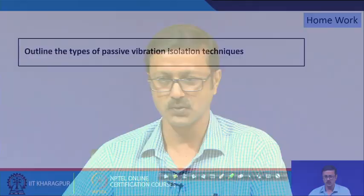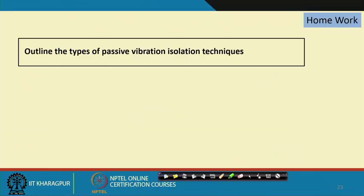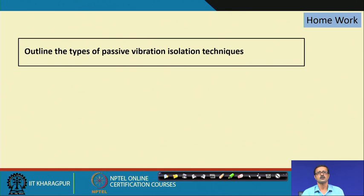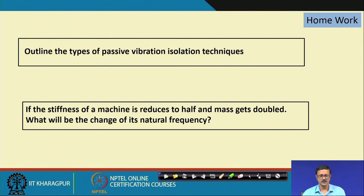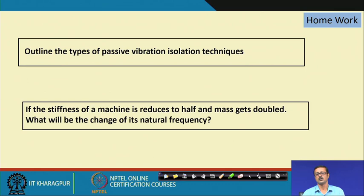At the end of this lecture, two homework questions are assigned: first, outline the types of passive vibration isolation techniques; second, if the stiffness of a machine is reduced by half and the mass is doubled, determine how the natural frequency changes — is it the same, higher, or lower, and by how much? References are provided, and the next lecture will be the last on structure-bound sound transmission. Thank you.